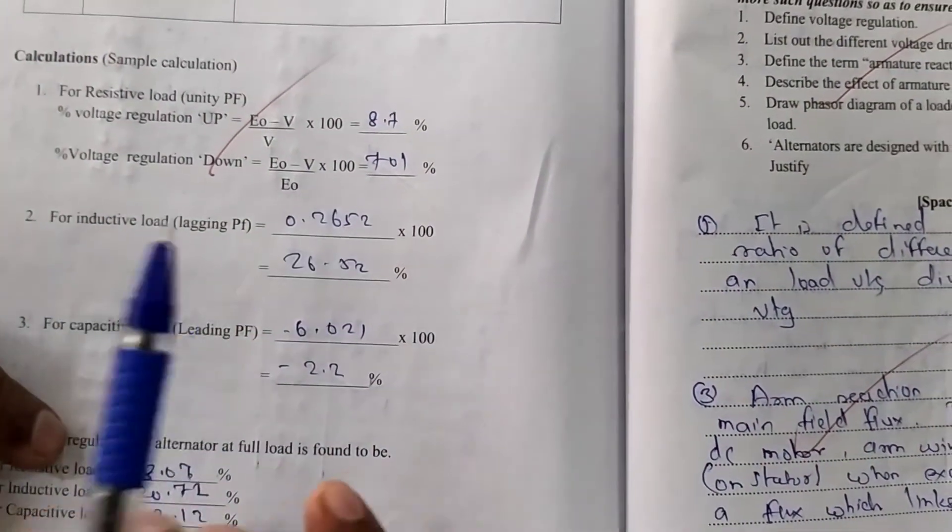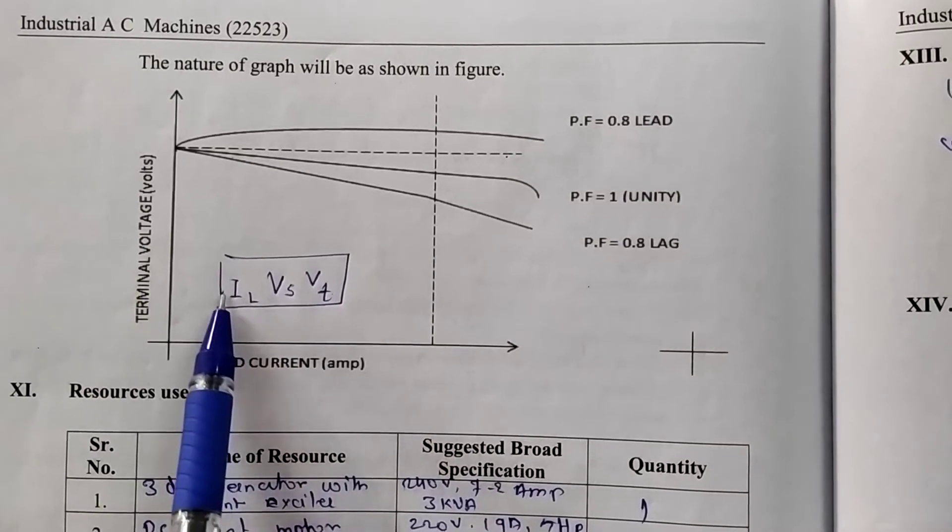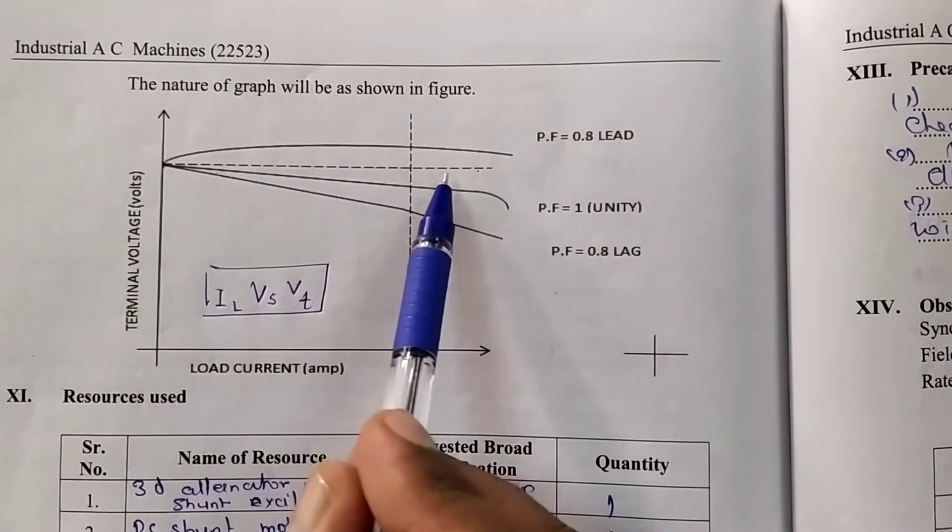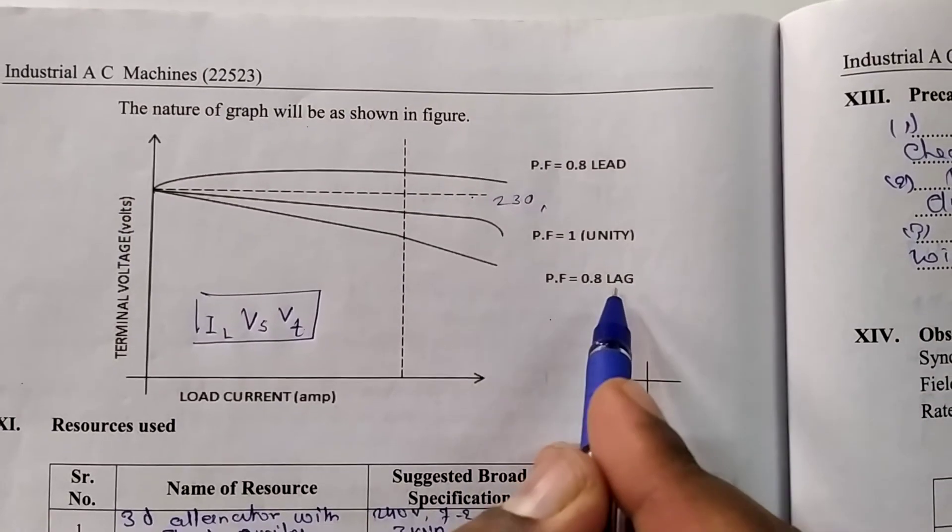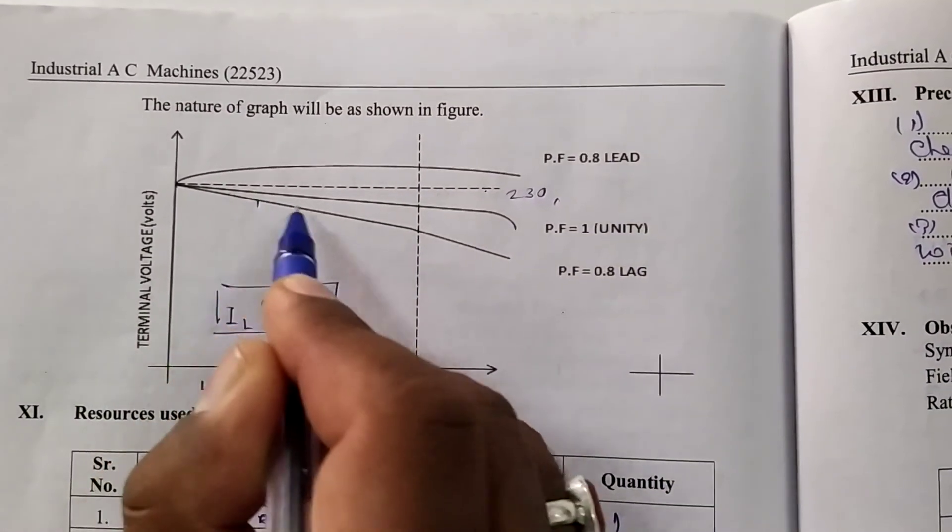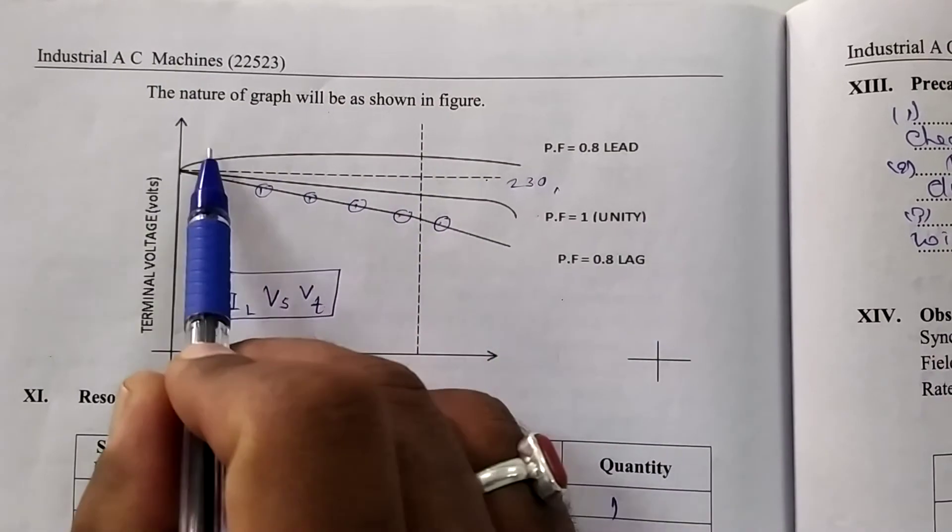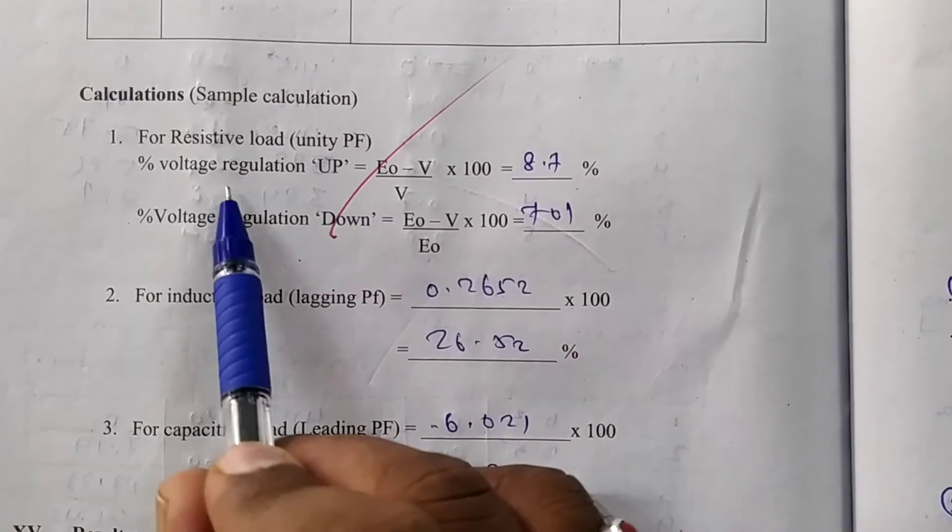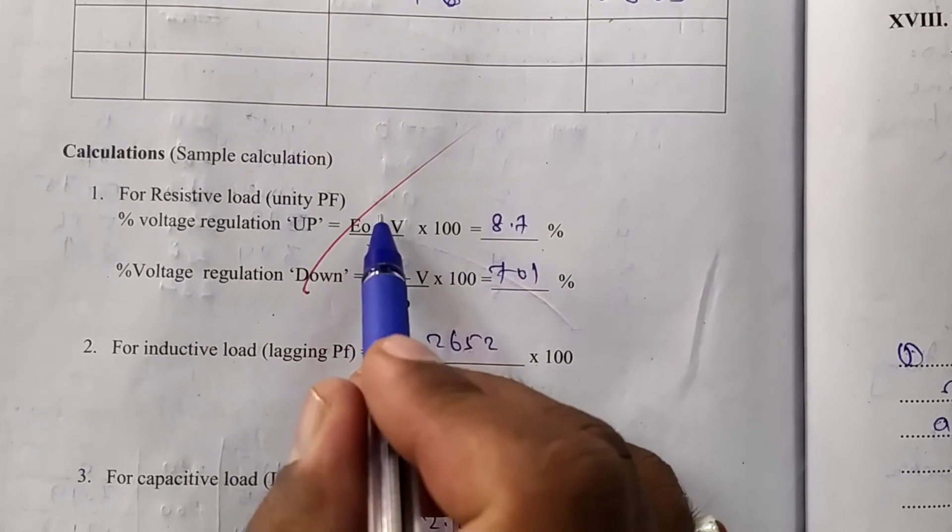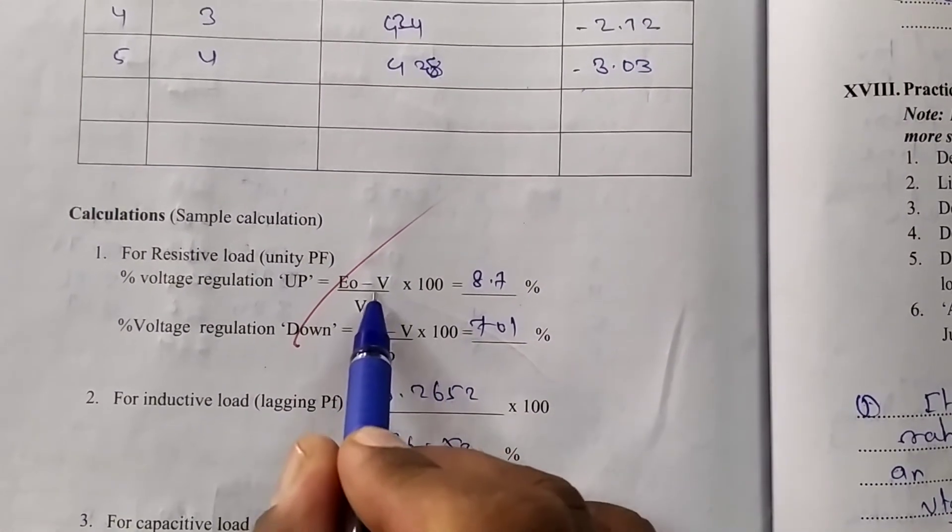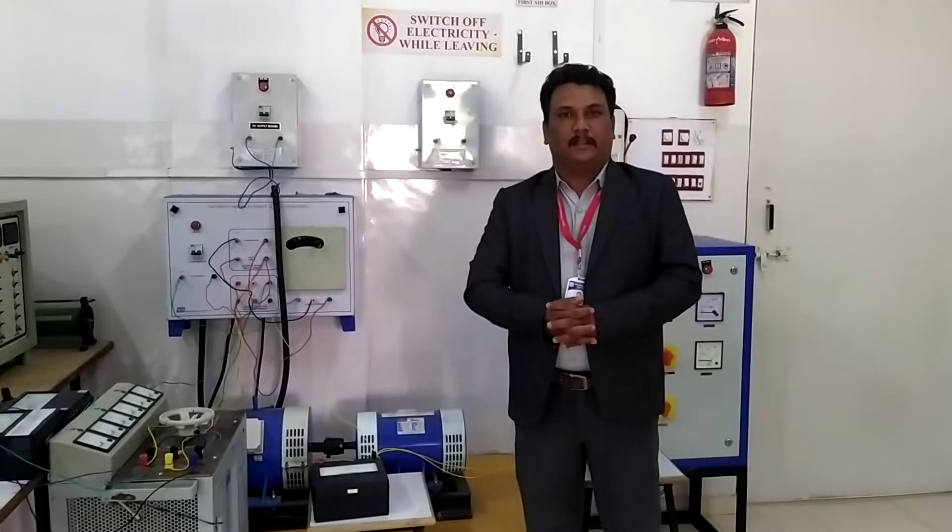Now calculation part. The obtained data is plotted in the graphical manner means load current versus IL versus terminal voltage. And this baseline means we have taken 230 volt. Plot the point here as per the characteristics. And procedure repeated for the capacitive load. By using the regulation up and regulation down formula, E0 minus V. E0 is we are taken 230 volt. And accordingly the calculation is done and calculate the regulation of the alternator. In this we conducting and performing our experiment number eleven.